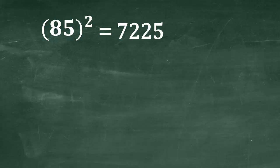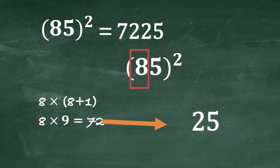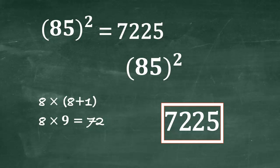Can you tell square of 85? Yes, 7,225. But how? Square 5, write 25, then remaining is 8, multiply 8 and 1 more than 8, it means 8 into 9, is 72, write 72. Answer is 7225.